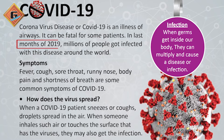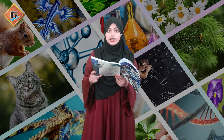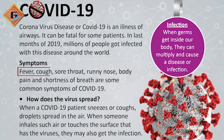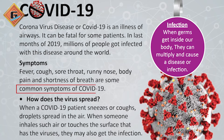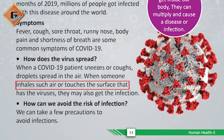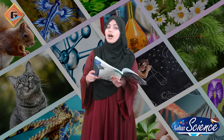Do you know why it is called COVID-19? It was discovered in 2019 and millions of people got infected with this disease around the world. The symptoms include coughing, fever, cough, sore throat, running nose, body pain, and shortness of breath. It spread through sneeze and cough droplets in the air — when someone inhales such air or touches a surface that has the virus, they may also get infected.